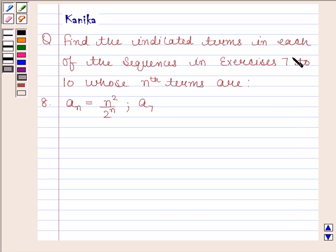The question says find the indicated terms in each of the sequences in exercises 7 to 10 whose nth terms are. Part 8 is: an is equal to n squared by 2 to the power n, and the indicated term is a7. Let us now begin with the solution.